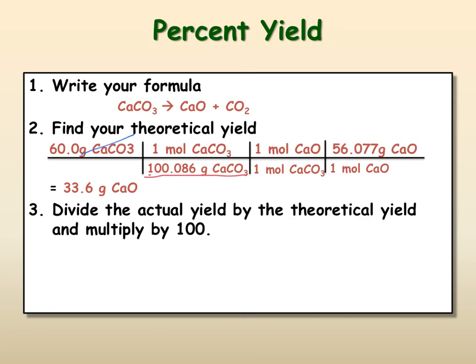Then from there, we actually need to convert from moles of calcium carbonate to how many moles of calcium oxide we're going to get out. And that's where you put your molar ratio in. And then once we have it in moles of calcium oxide, we have to convert that to grams using the molar mass of calcium oxide. So in the end, we make 33.6 grams of calcium oxide. Three sig figs for three sig figs.